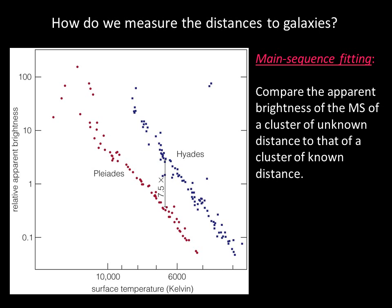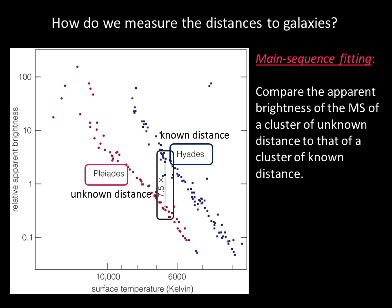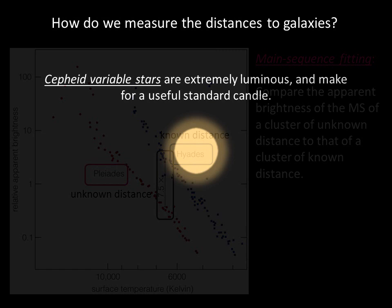Consider two clusters: the Hyades and the Pleiades. We know the distance to the Hyades from parallax, but we don't know the distance to the Pleiades. If we can measure the apparent brightness of both clusters and see that a star of a particular temperature in the main sequence of the Hyades appears 7.5 times brighter than a star of the same temperature in the Pleiades, we can scale the stars of the Pleiades to the stars of the Hyades, learn their true luminosities, and use the inverse square law to calculate the distance.